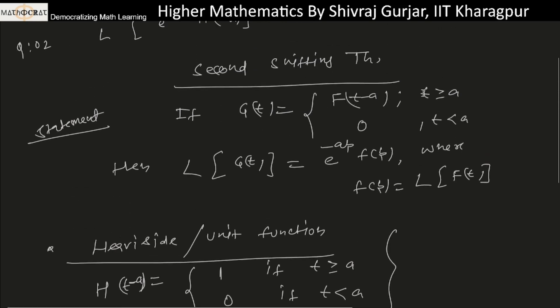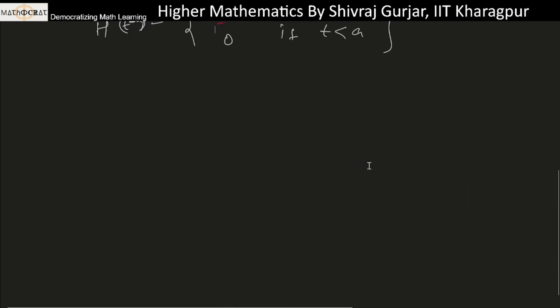This is known as the unit function. When t is greater than or equal to a, then g(t) equals f(t-a) times H(t-a). When t is greater than a, the H part is one, and when t is less than zero, this will be zero only.